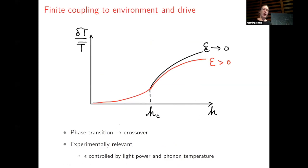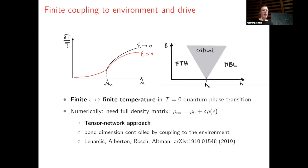So far I've described this ideal limit of taking perturbations to zero, while in experiments there will always be finite coupling to phonons, which has to be compensated with finite drive. What's really relevant for the experiment is finite couplings to the environment, which can be controlled by the phonon temperature and intensity of the light source. Similarly to how one tunes temperature in zero-temperature phase transitions, one can here tune the strength of coupling to the environment in order to learn about the underlying MBL transition.